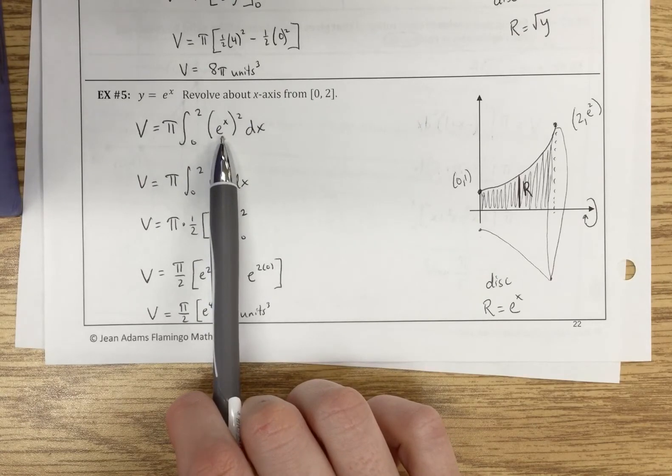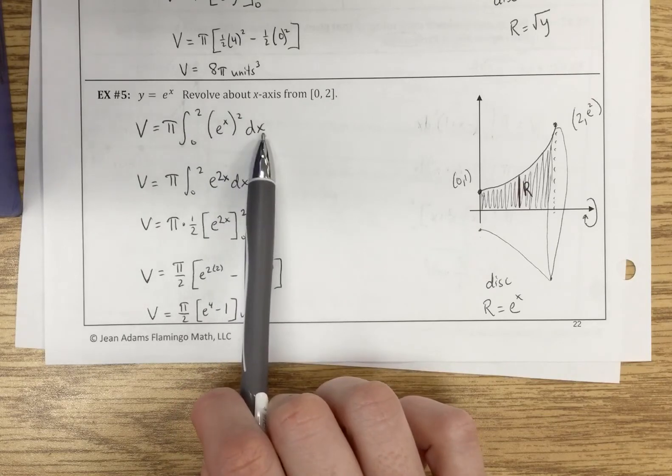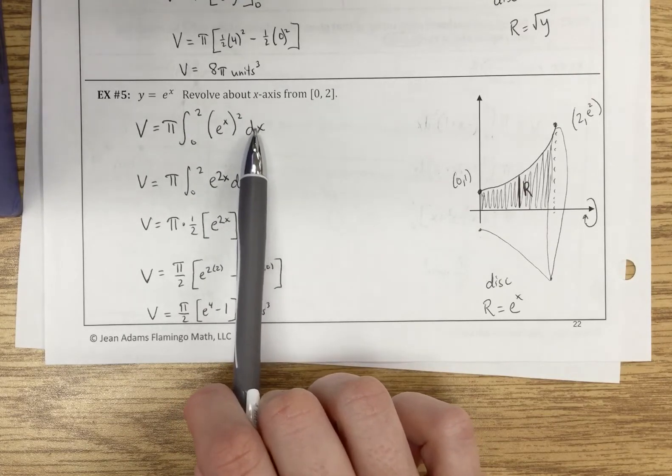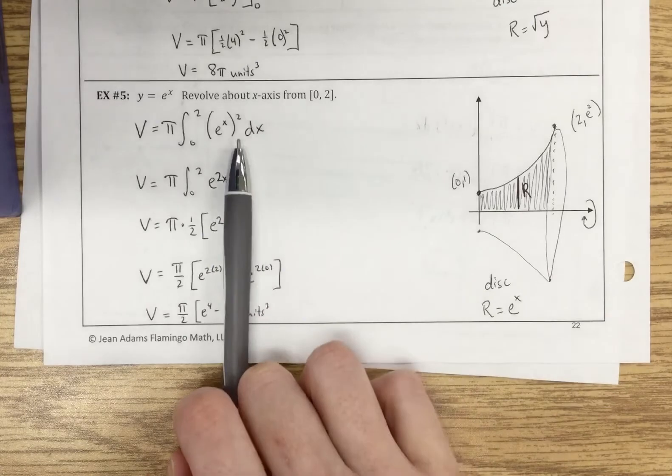e to the x is our radius, our r value, so we're squaring that. And then the dx, of course, is the width of our disk, or height of our little baby cylinder.